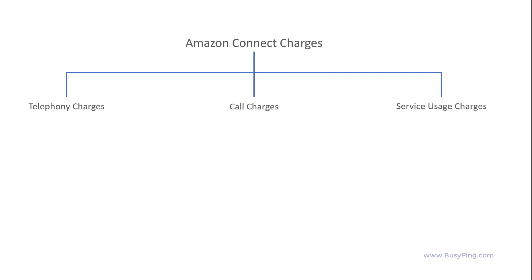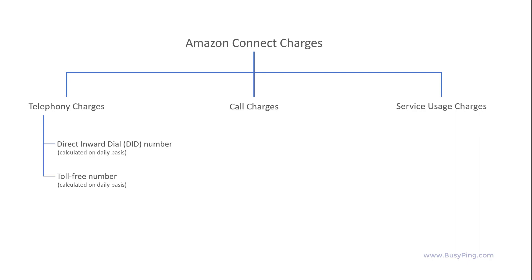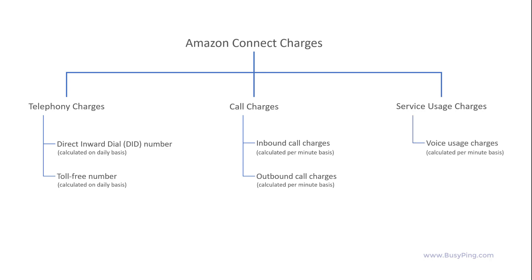Telephony charges are basically the charges you pay for reserving a phone number. There are two types of phone numbers: Direct Inward Dial, or DID, number and a toll-free number. A DID number is simply a regular phone number where the caller will be charged when they call, unlike a toll-free number. Then you will be charged for any incoming or outgoing calls on a per-minute basis. Finally, there is a service usage charge which is billed per minute for voice usage and per message for chat usage.